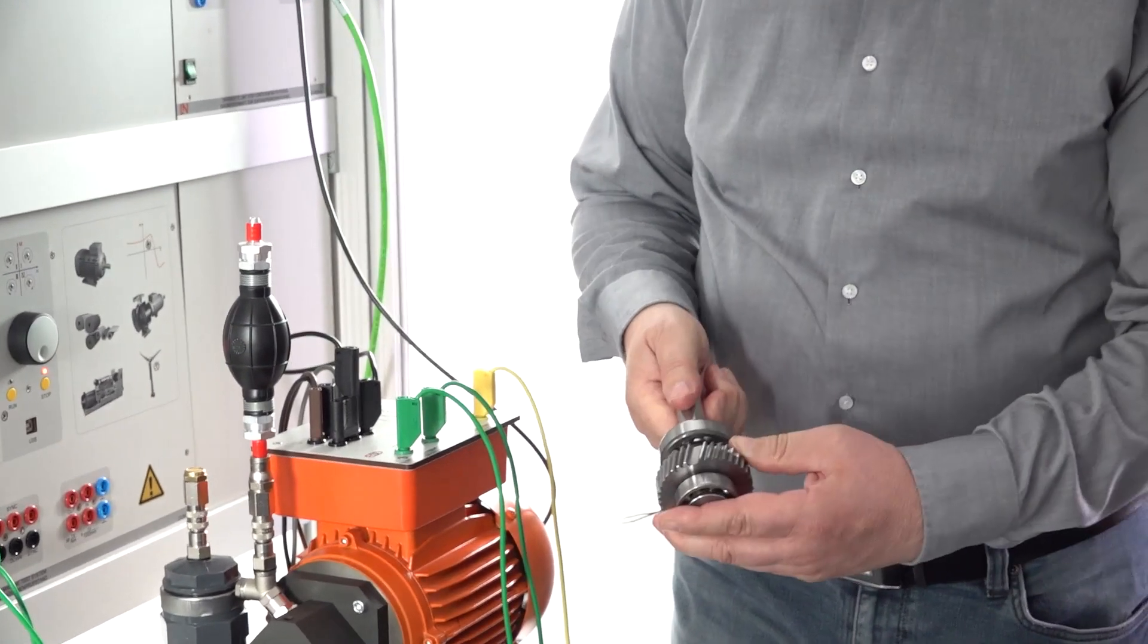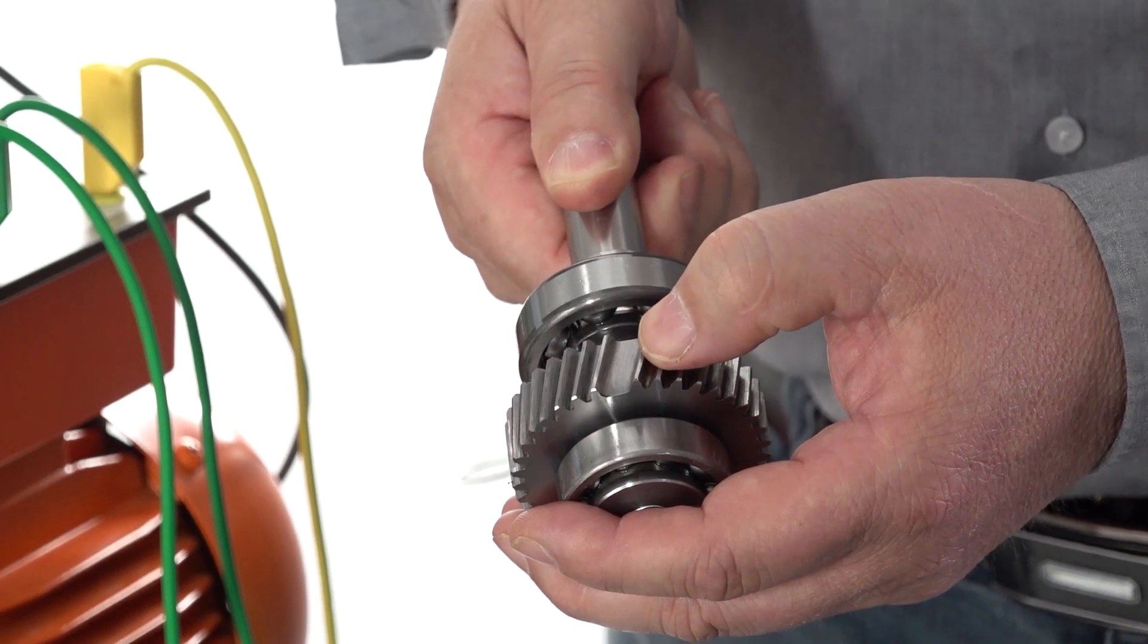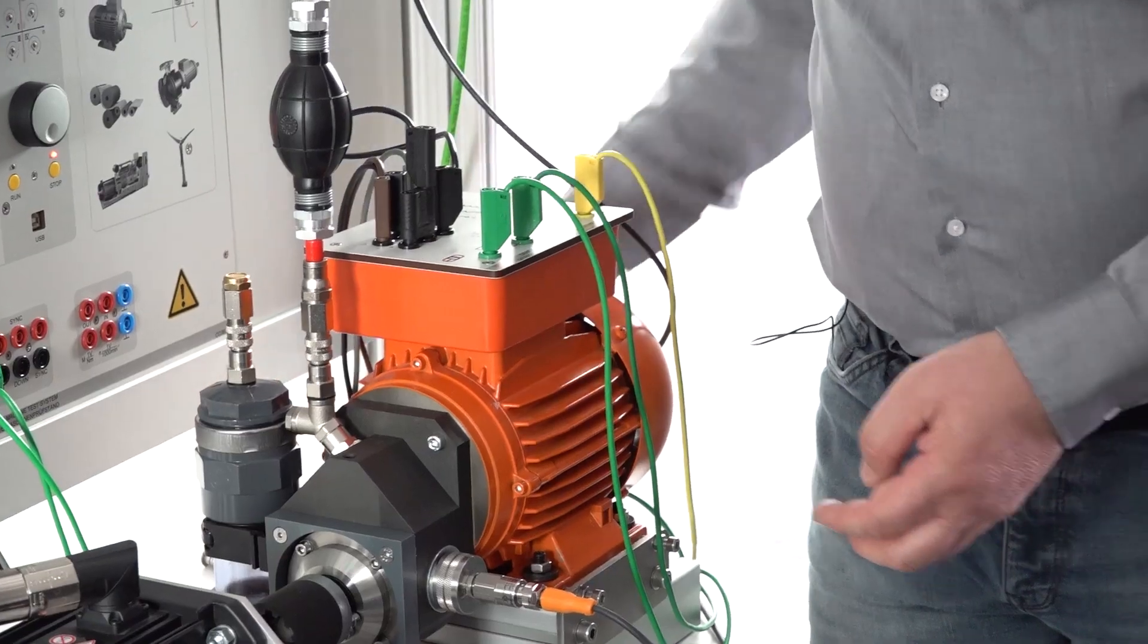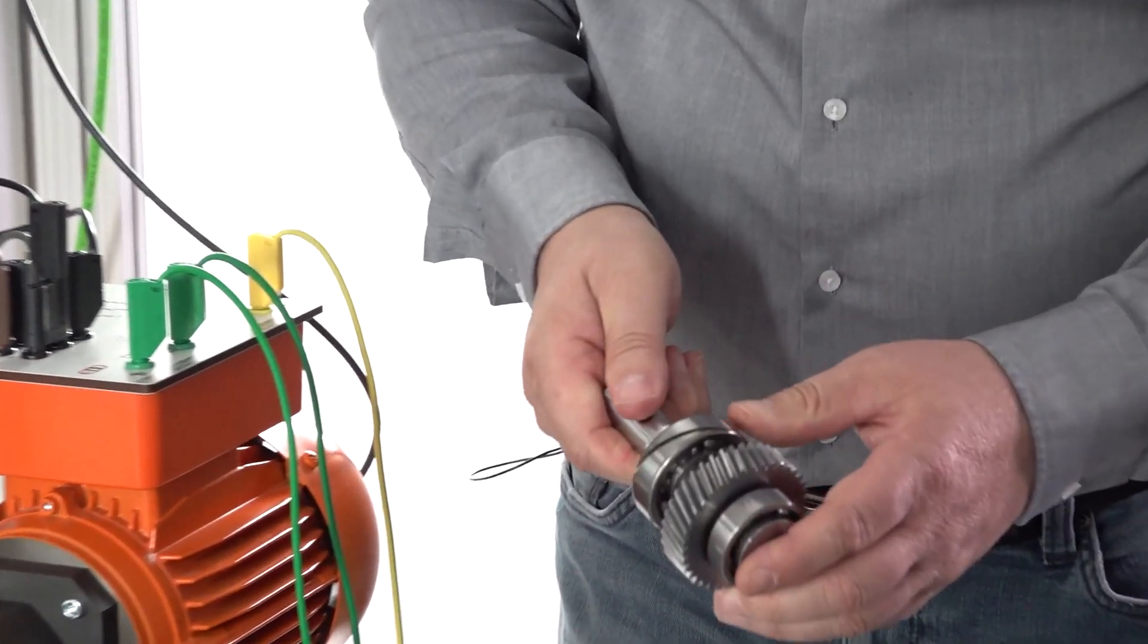For example, we have here one fault with a tooth fault, a gear fault. Or we can use a fault with a defective bearing.